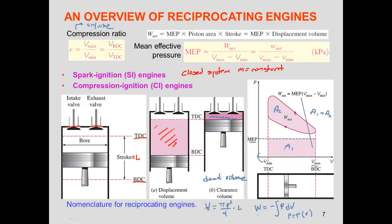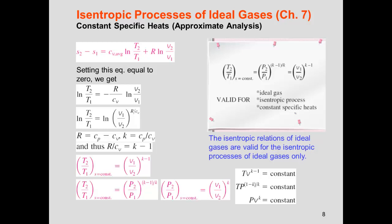Now let's look at how to analyze isentropic processes — the compression and expansion. We can do this in two ways, which is a refresher of chapter seven. We start with the expression to compute the change in entropy for a system: Δs = c_v · ln(T2/T1) + R · ln(V2/V1). This can also be expressed in terms of pressure.